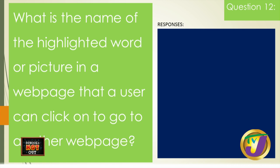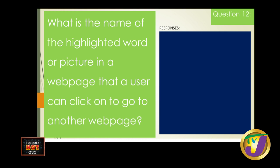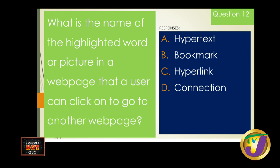Question twelve: what is the name of the highlighted word or picture in a web page that a user can click on to go to another web page? The responses are A) hypertext, B) bookmark, C) hyperlink, D) connection. The answer is hyperlink. As long as you can click on a particular picture or word and it sends you to another web page, it is called a hyperlink.